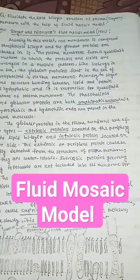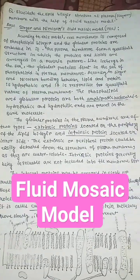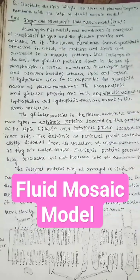The globular proteins in the plasma membrane are of two types: extrinsic proteins located on the periphery of the lipid bilayer and intrinsic proteins located on the inner side.